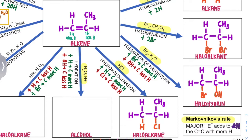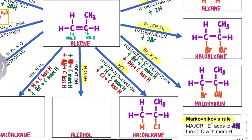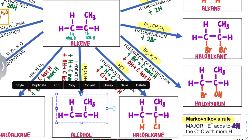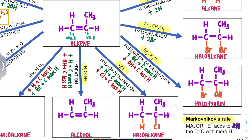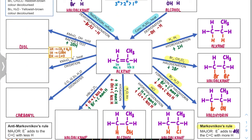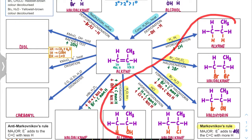Next one is hydration, where we add water — one H and one OH. Hydrogen will be added to the carbon with more hydrogen, and OH will be added to the carbon with less hydrogen. We remove the double bond and form two new bonds: H goes to the carbon with more H, OH goes to the other, and we form our alcohol. These five reactions all follow the Markovnikov rule, which is why they are highlighted in yellow.